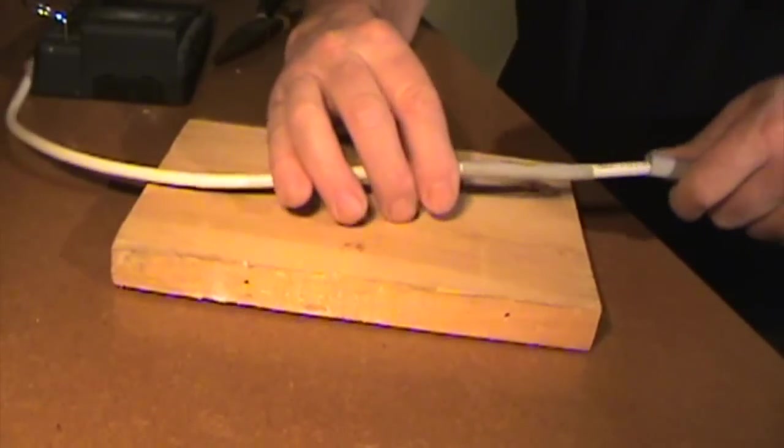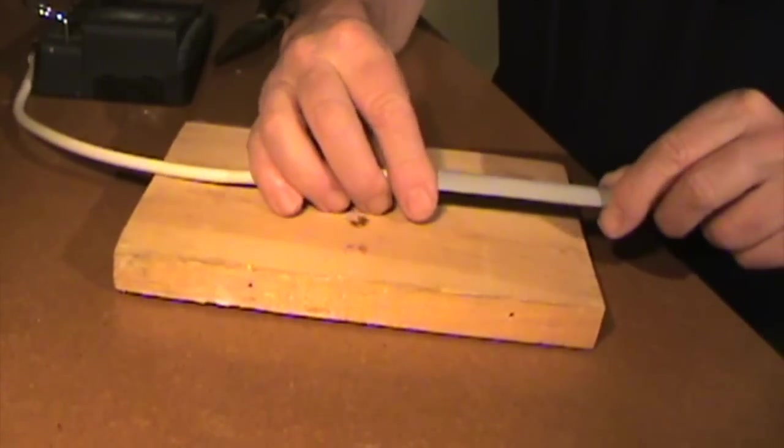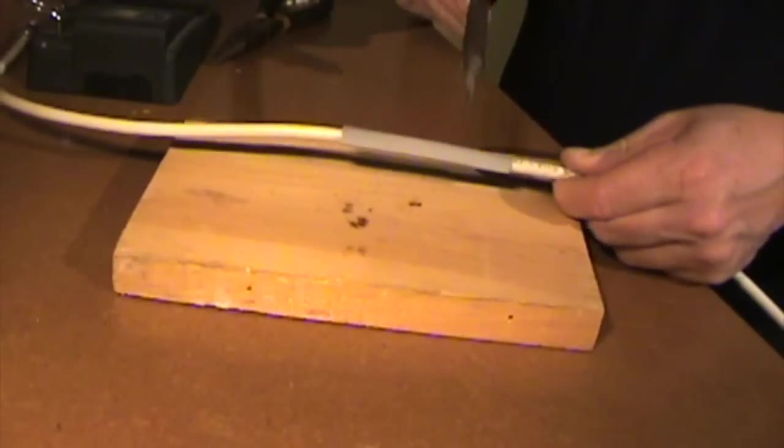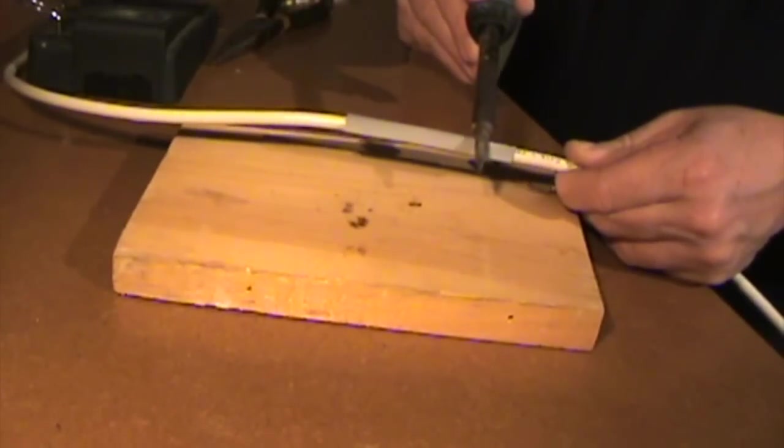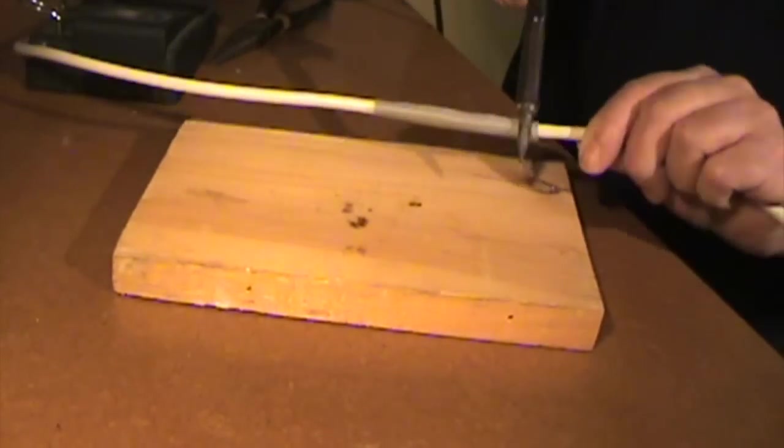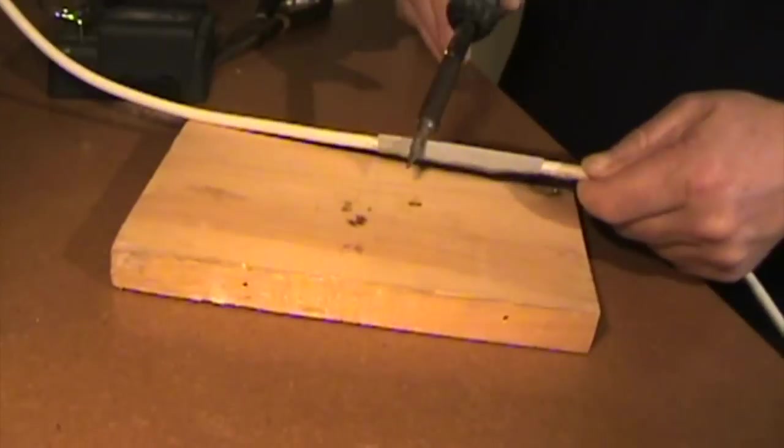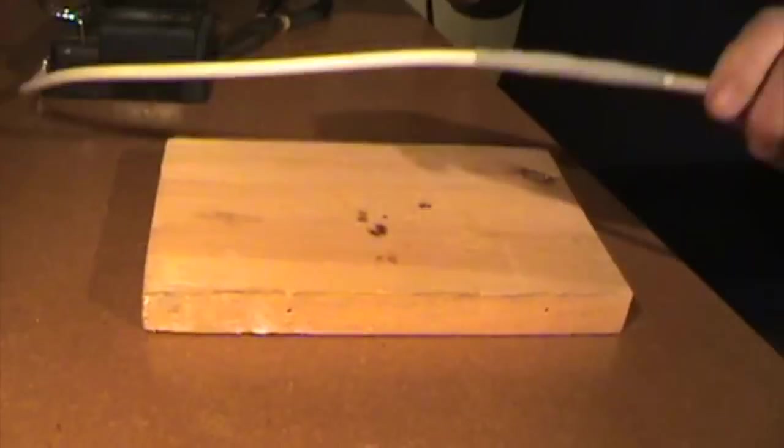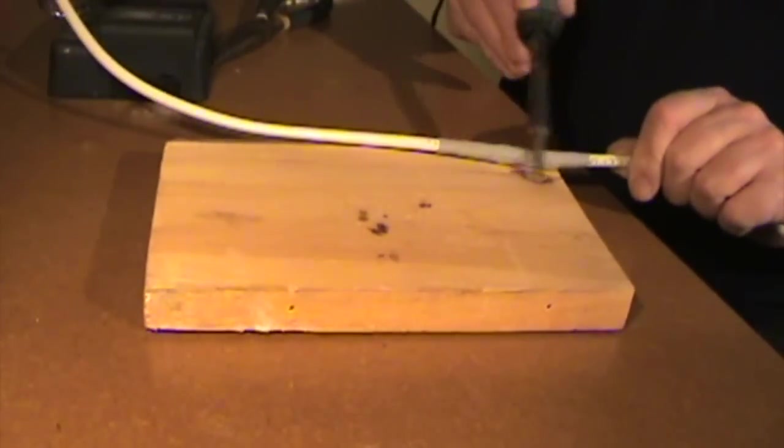Now pull the second shrink wrap over the first, and using the soldering iron just shrink that down nice and tight. And your job is just about done.